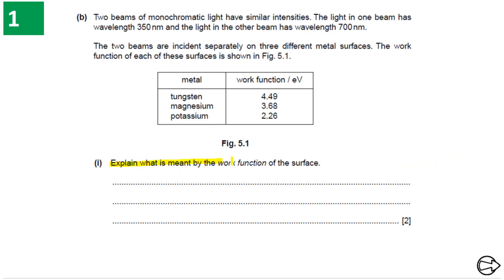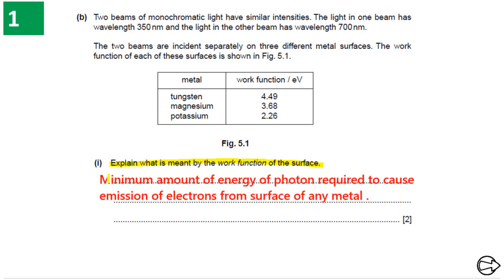For Part B1, we need to define what is the work function of a surface. It means the minimum amount of energy required to release electrons from the surface. The work function is defined as the minimum amount of energy of a photon required to cause emission of electrons from the surface of any metal.